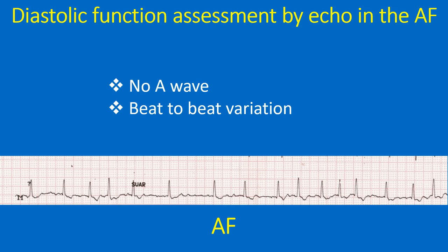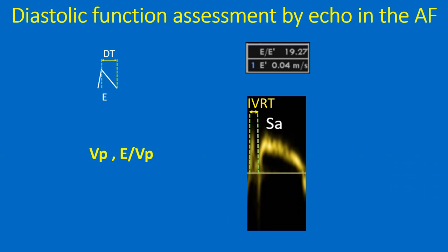Moreover, variation in the cardiac cycle also causes beat-to-beat changes in ventricular relaxation in AF. Echo parameters useful in the presence of AF include mitral E-wave DT and E-by-E prime, color M-mode derived Vp (early diastolic flow propagation velocity) and E-by-Vp, peak pulmonary vein diastolic flow velocity, pulmonary vein diastolic wave DT, peak acceleration of the mitral E-wave, IVRT, and the ratio of IVRT to the time between onset of E and E prime waves.